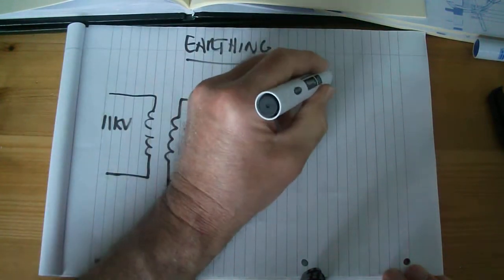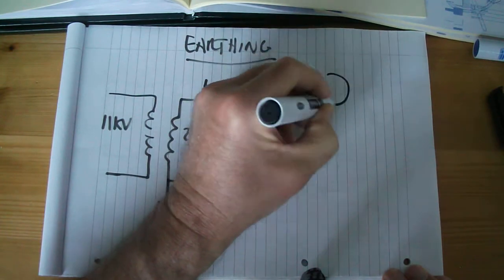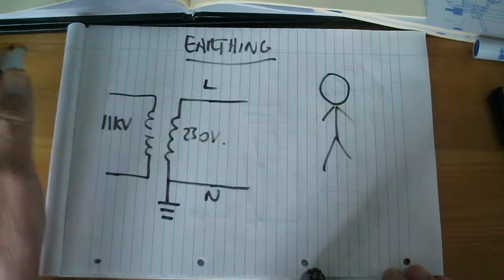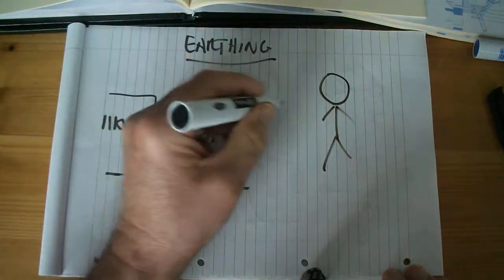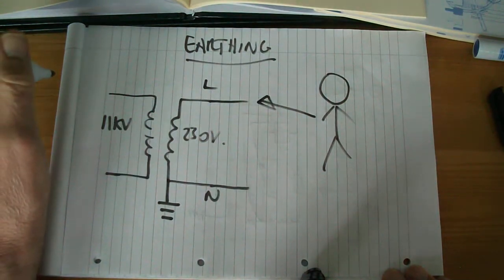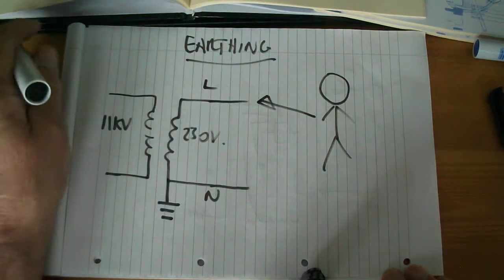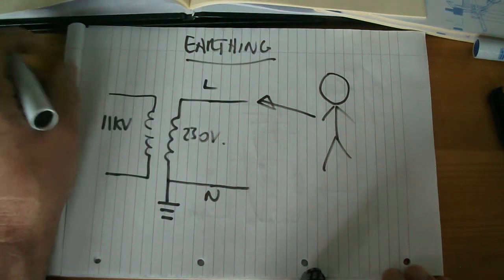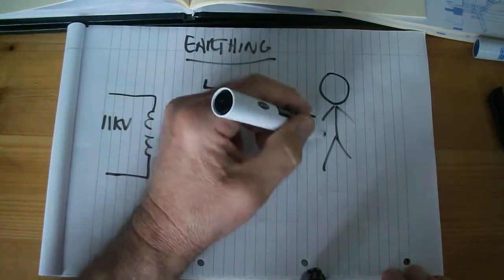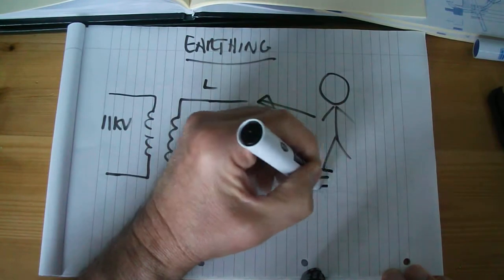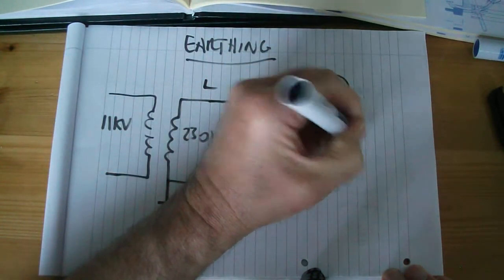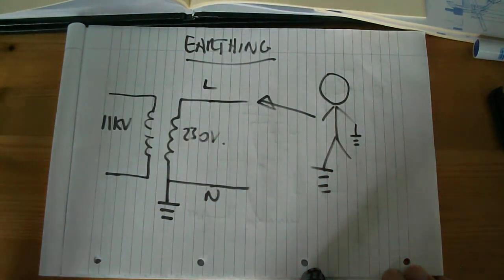Now if you cast your mind back to our health and safety module a few weeks ago, we described how we get an electric shock. Well, if we touch a live part, either the wire itself or a piece of apparatus that has become live and you touch it, electricity will flow through you and down to earth. It could be through your feet, but it could be through your other hand if your other hand is touching something that's earth.